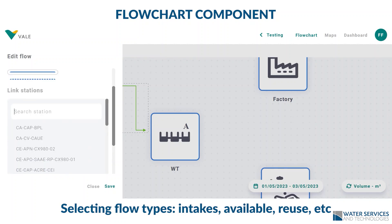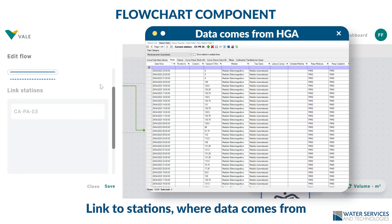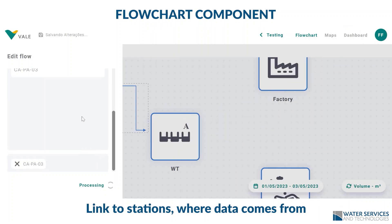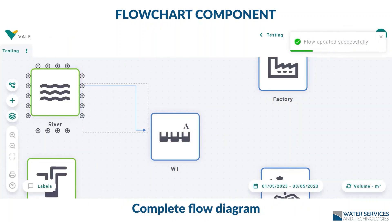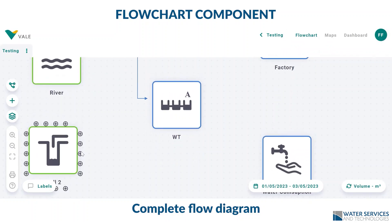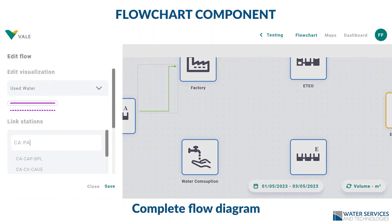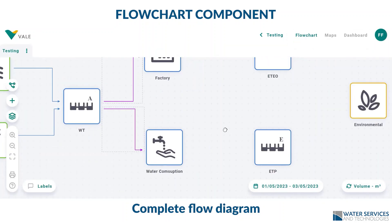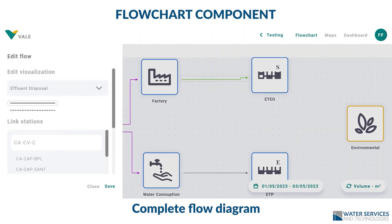Again, you link to a station where the flow is measured for each point. Remember, all data comes directly from HGA and the link is automatic. You repeat the process and the end result is a complete flow diagram of your operation, which is fully flexible. You can add or remove structures and flow lines at any time without losing the history of the operation.